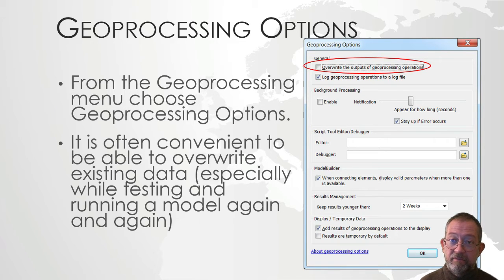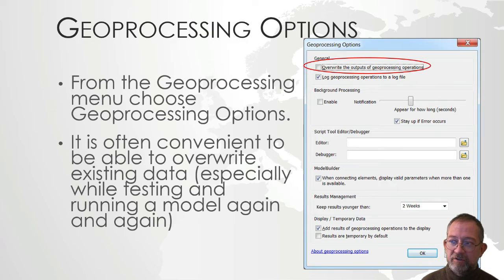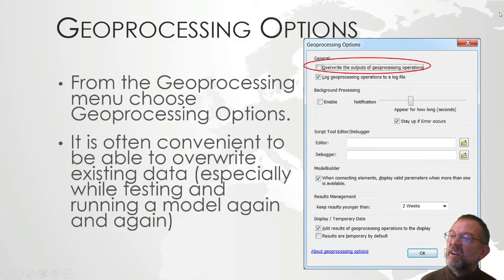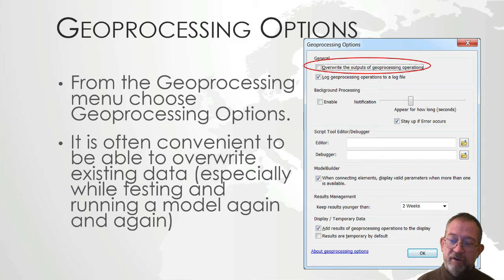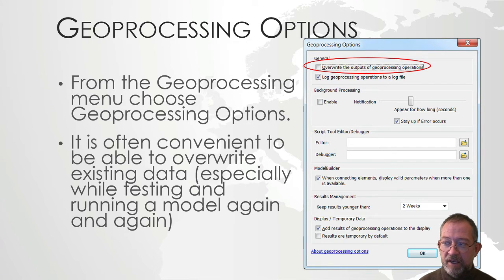Remember that this means the data can be lost, but in the geoprocessing situation I would say it is typically most convenient to have overwrite enabled so we don't have to worry about renaming files. Also note that you can choose background processing. Background processing means that while the tool is running you can work in the main interface. There will be a little blue ribbon at the bottom of the screen. If you are running on a 64-bit computer, background processing gives access to the 64-bit processor instead of the 32-bit that the foreground application uses.